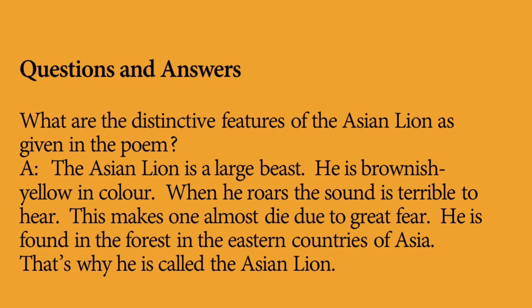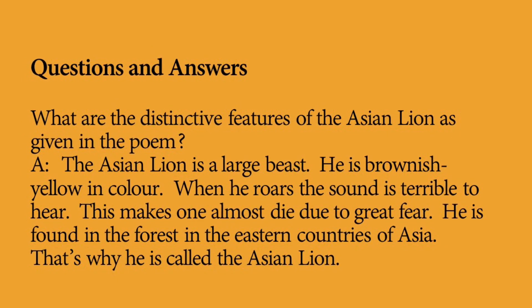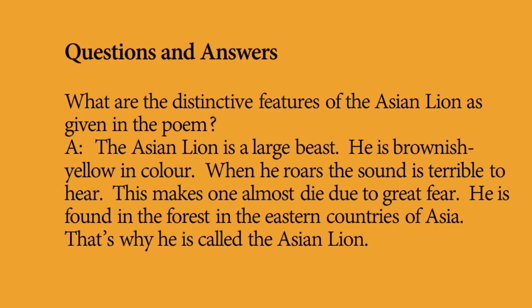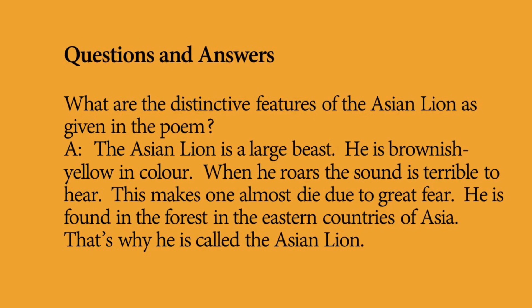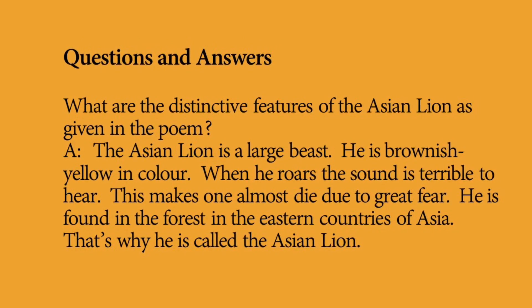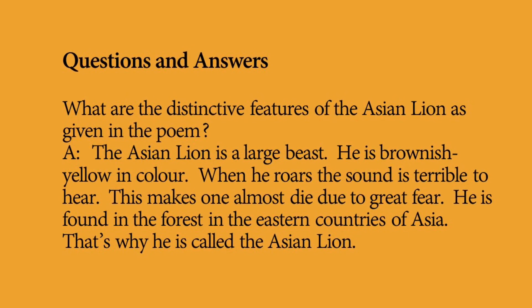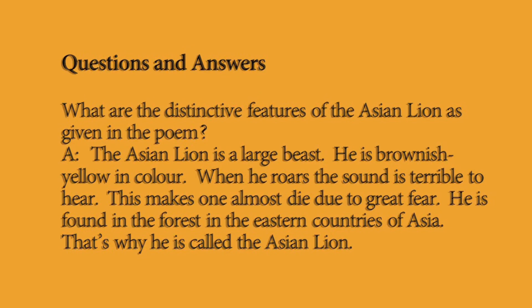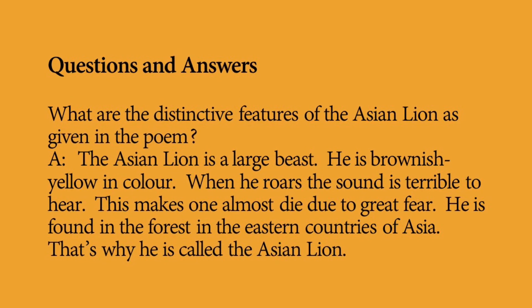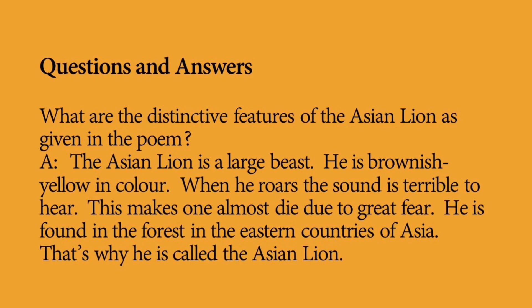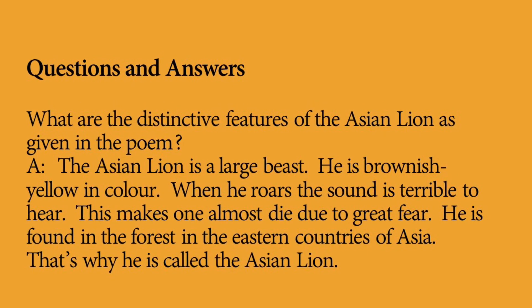Question number one: What are the distinctive features of the Asian lion as given in the poem? Answer: The Asian lion is a large beast. He is brownish yellow in color. When he roars, the sound is terrible to hear. This makes one almost die due to great fear. He is found in the forests of the eastern countries of Asia. That's why he is called the Asian lion.